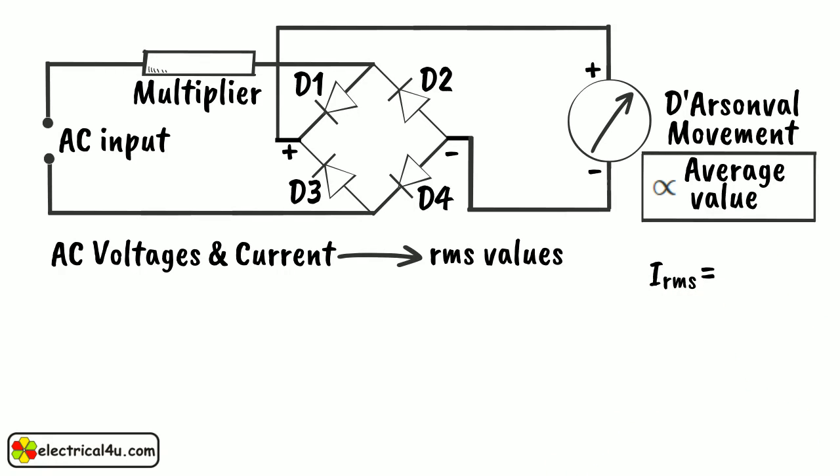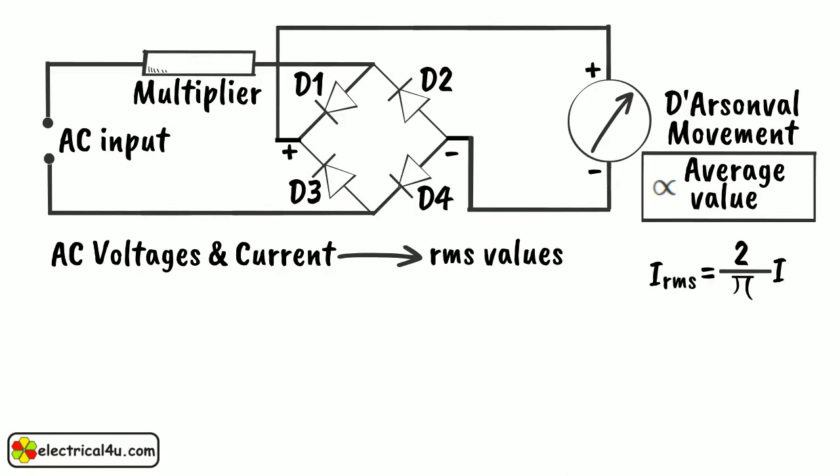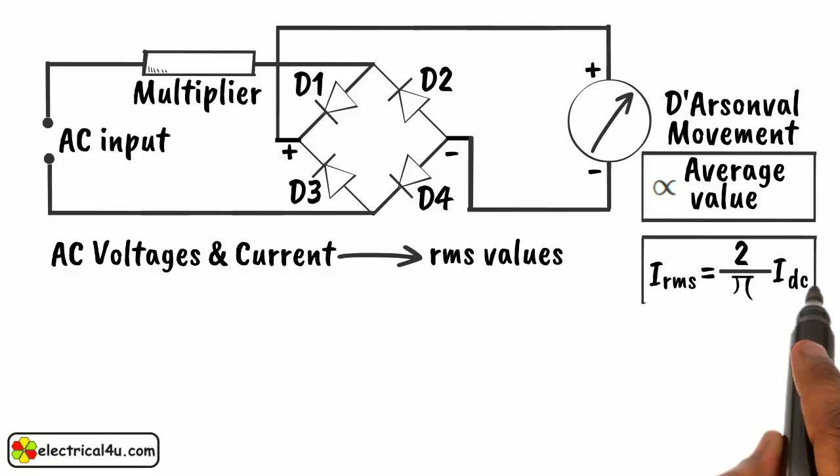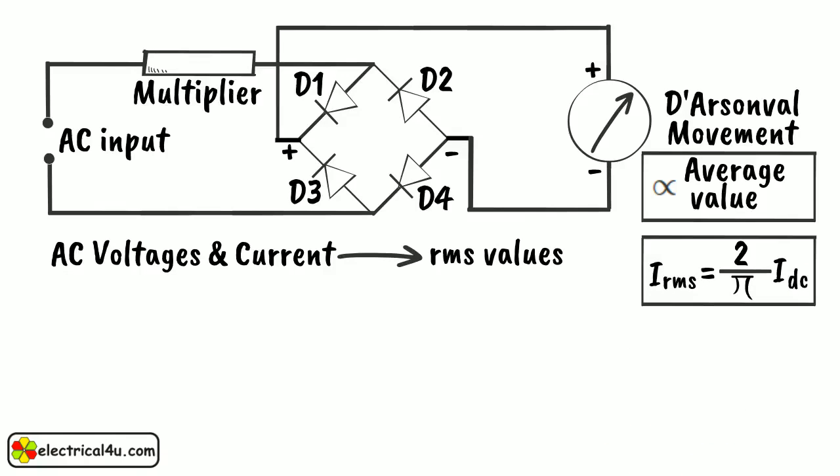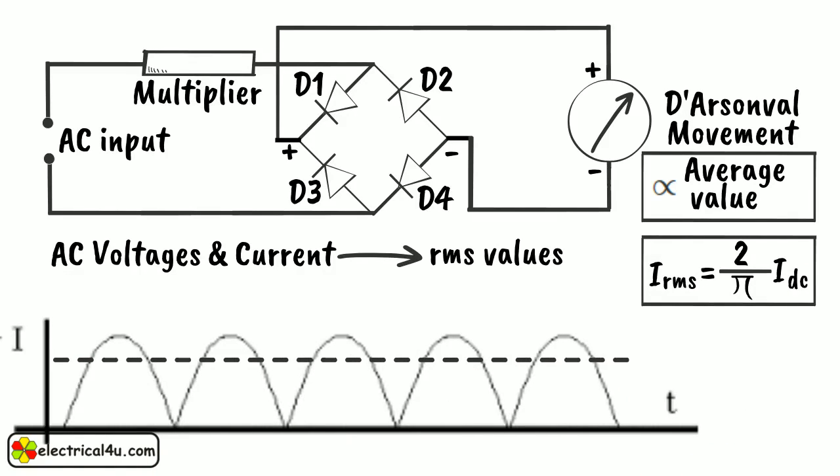RMS value of current is 2 by pi times of DC value. Hence, the scale is to be calibrated in terms of the RMS value of a sinusoidal waveform.